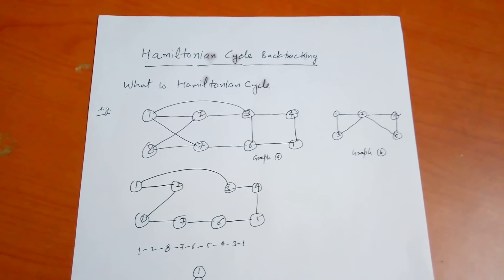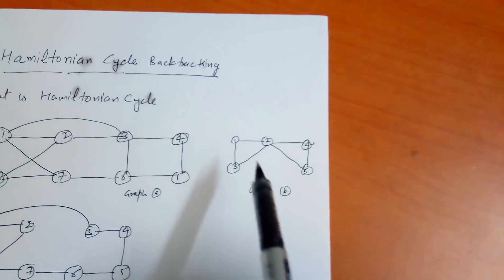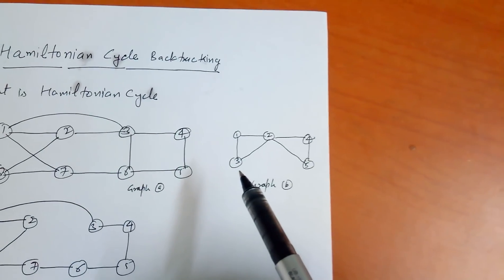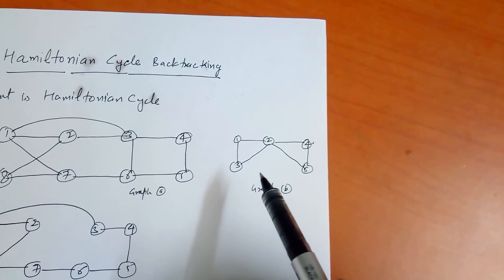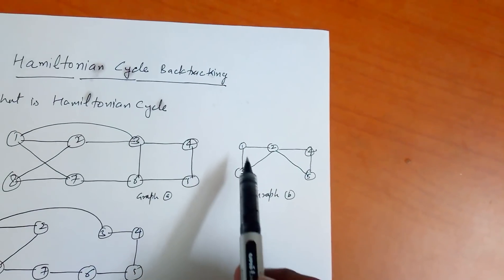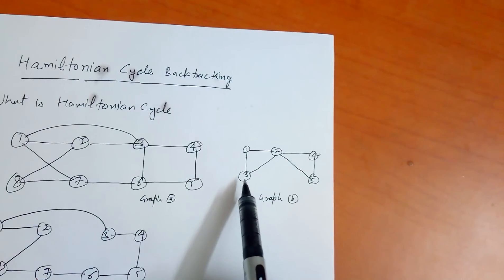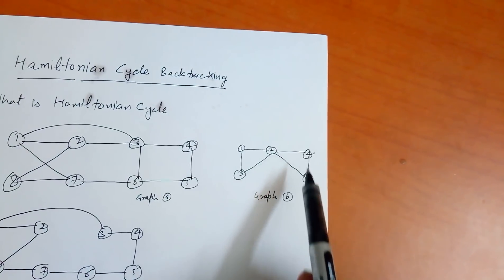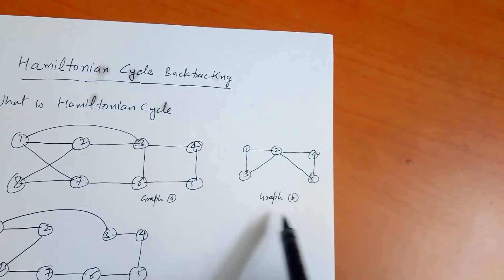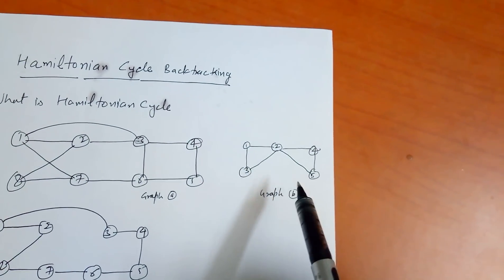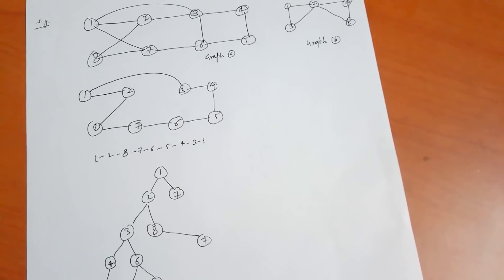In Graph B, when we start from any node, we cannot return to that node having visited each node exactly once. For example, starting from node 1, we go to 2, then 3, but from node 3 we cannot reach node 4 or 5 directly — we would have to visit node 2 twice. So no Hamiltonian cycle exists in Graph B.